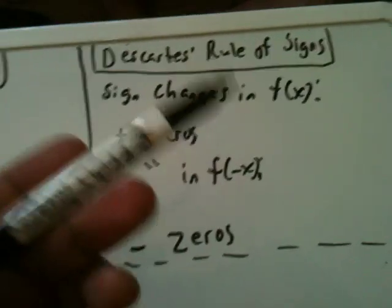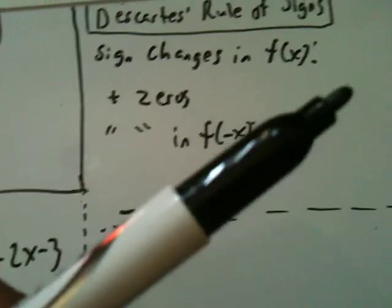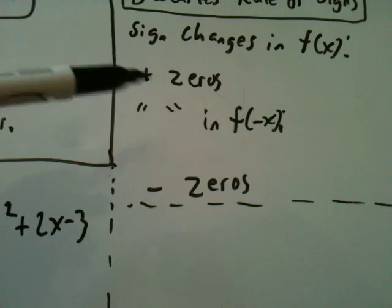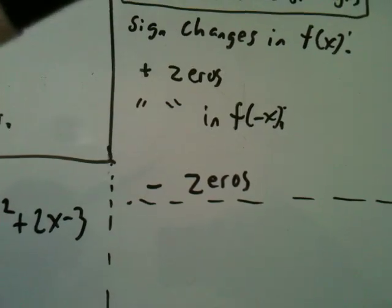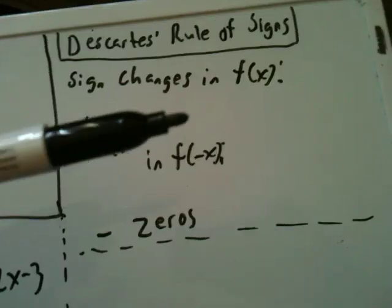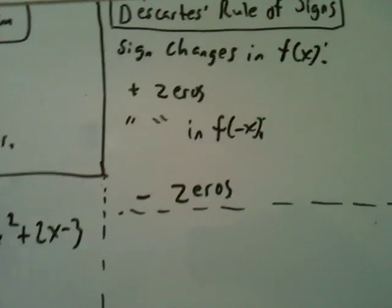And also, I didn't write it here, but you should account for the number of complex zeros. Complex zeros are always even. So you go from the highest degree of the polynomial, and then if it's odd, subtract 1. So if it's degree 5, you will have a maximum of 4 complex zeros, 2 complex zeros, or no complex zeros.